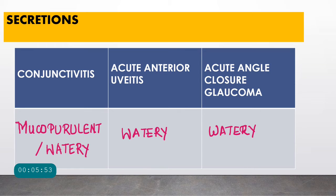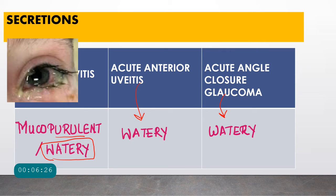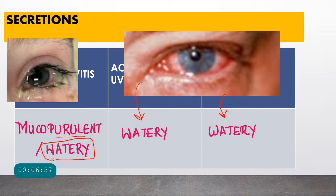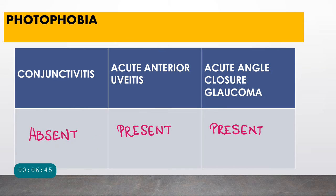Regarding secretions: bacterial conjunctivitis produces mucopurulent discharge, while viral conjunctivitis produces watery discharge. In acute anterior uveitis and acute angle closure glaucoma, the discharge is watery. A picture of acute purulent gonococcal discharge in a child illustrates bacterial conjunctivitis, while watery discharge points toward uveitis or angle closure glaucoma.